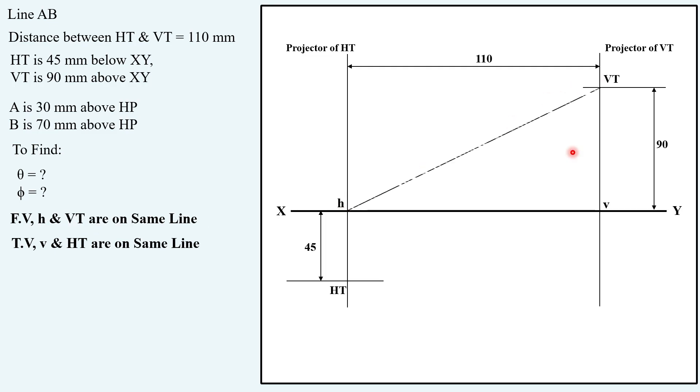Out of these points we have here H and VT so I can join these two. Similarly out of these I have V and HT so you can join these two.